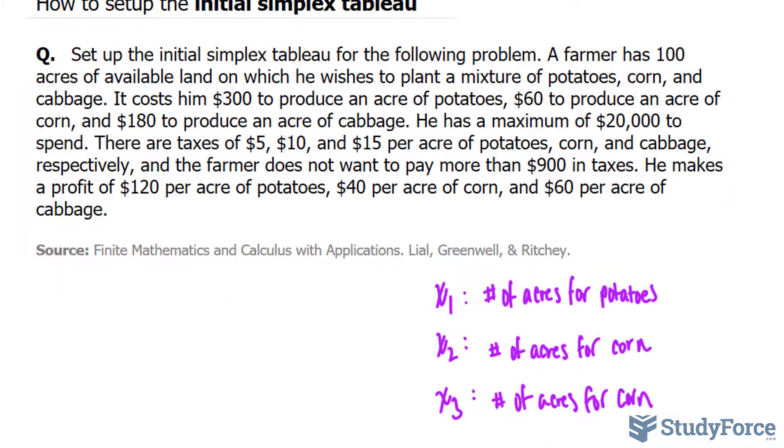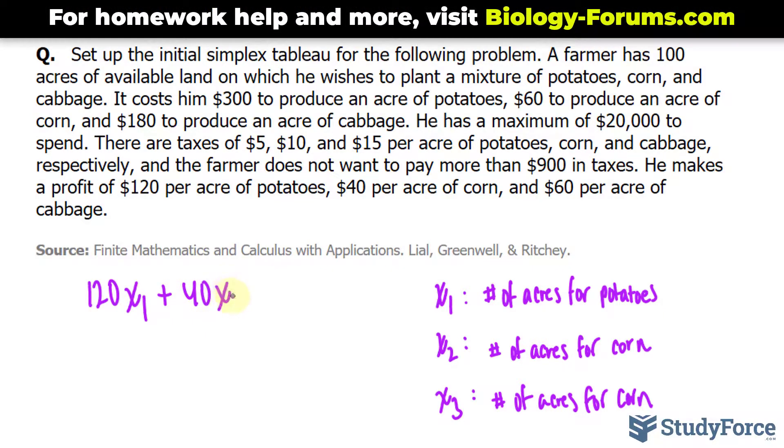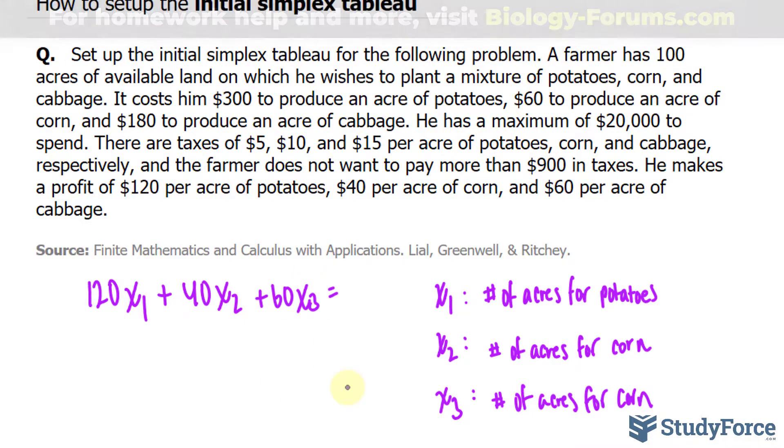Furthermore, we'll create the objective function next. We'll use the following information where we're told that he makes a profit of $120 per acre of potatoes, so 120 times x1, plus $40 per corn, so x2, plus $60 per cabbage, x sub 3. And that is equal to z, the maximum profit.